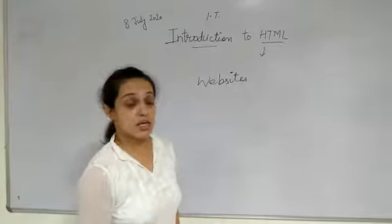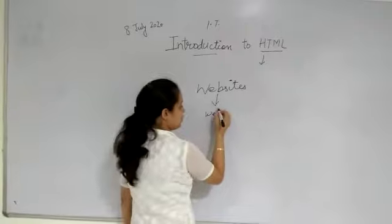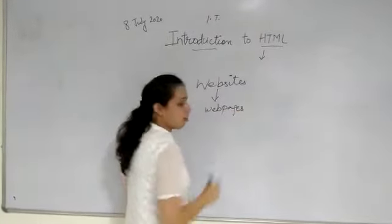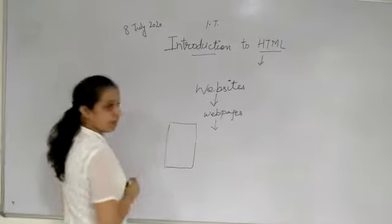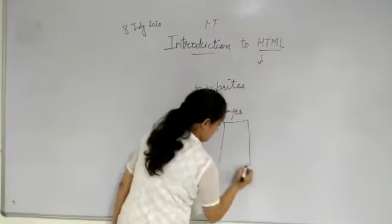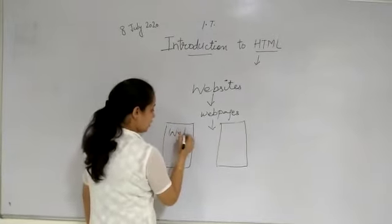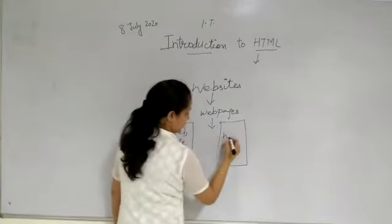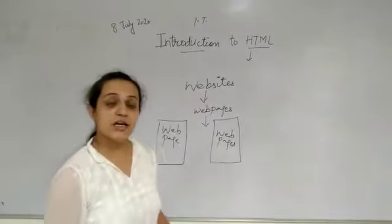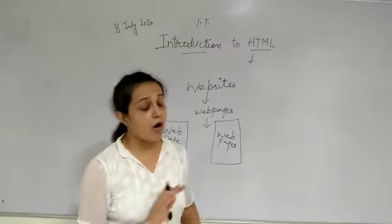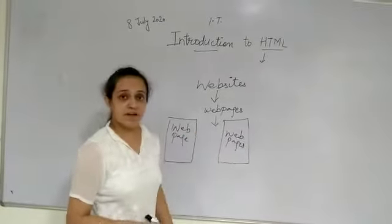Each and everything is available on the website and that information is available in the form of web pages. What are the web pages? When you open any information on the internet, this particular page is opened and that page is called your web page. All the pages on the website are called web pages. Each and every page on the website is called a web page.